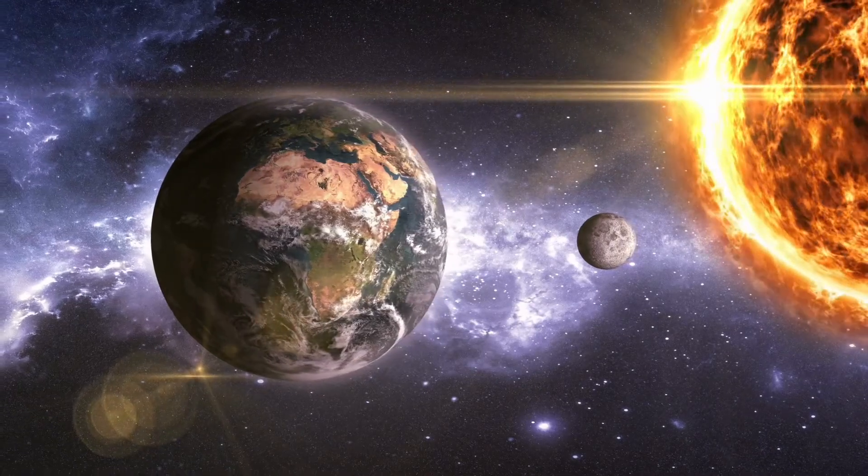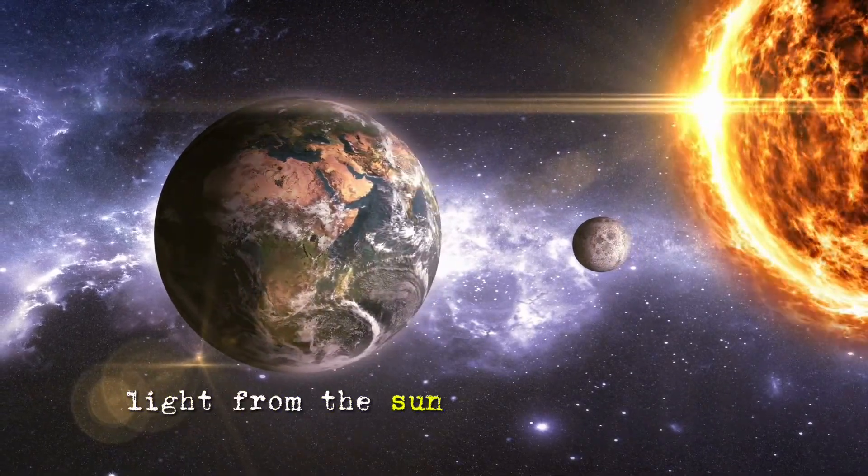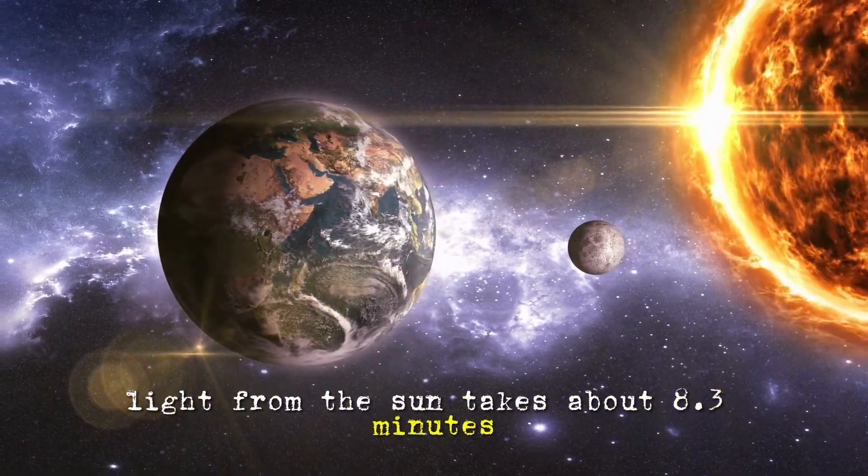So how far is the sun in light years? Well, it's not even one light year away. Light from the sun takes about 8.3 minutes to reach Earth.